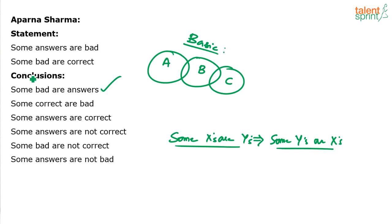Similarly, the second statement: some bad are correct, so some correct are bad. Some bad are correct — obviously some correct are bad. Again, no need to check the diagram for that.